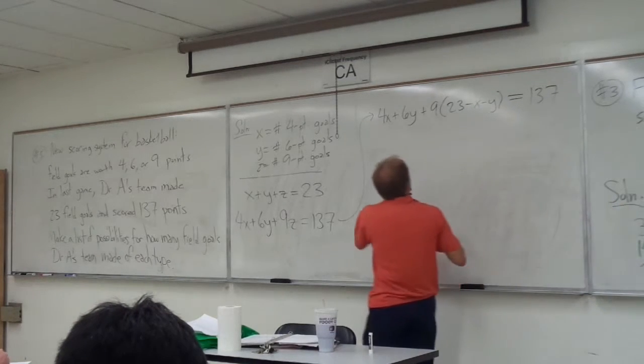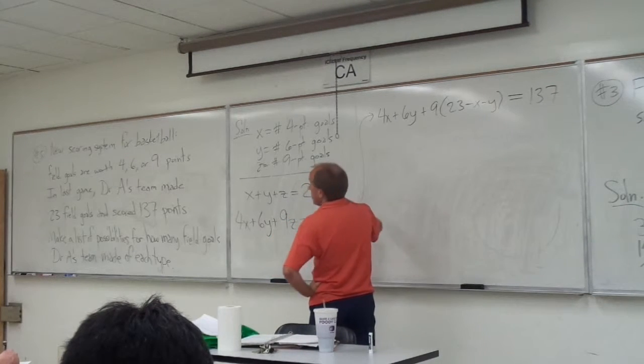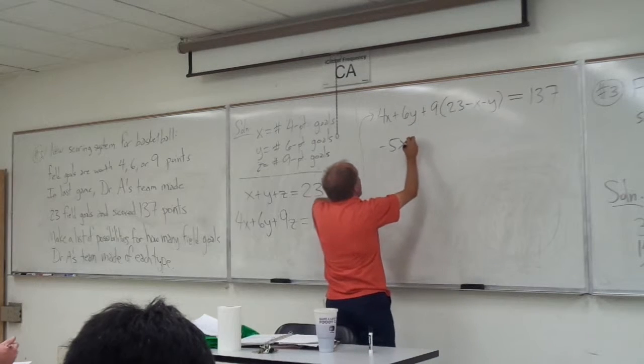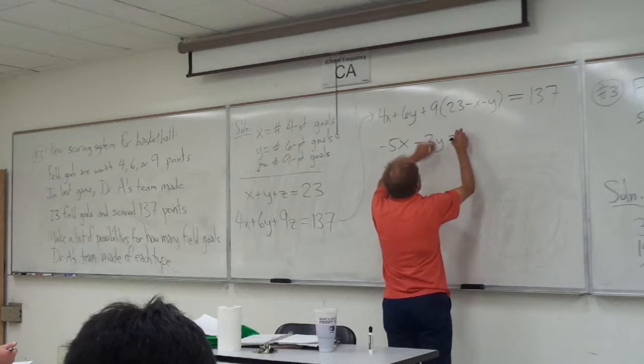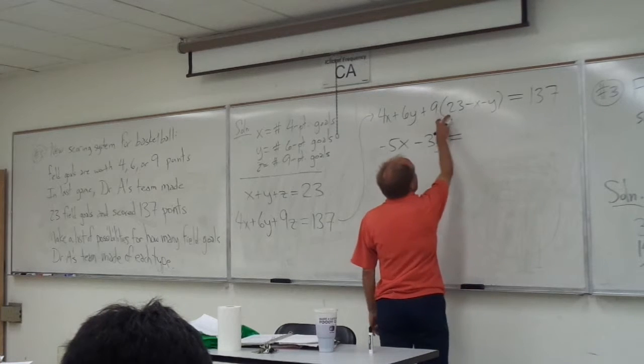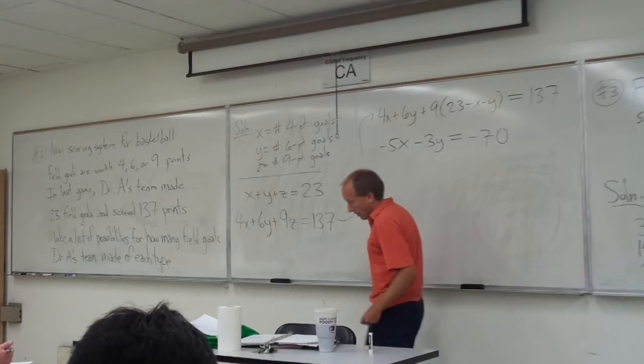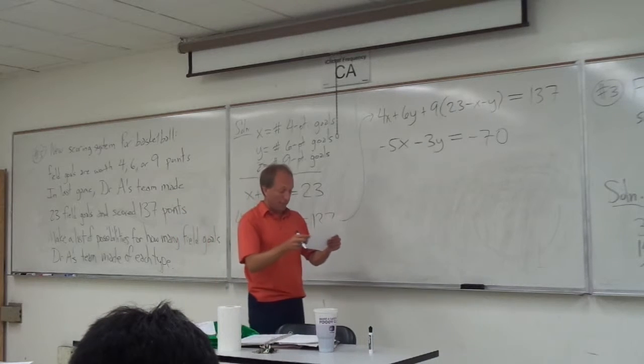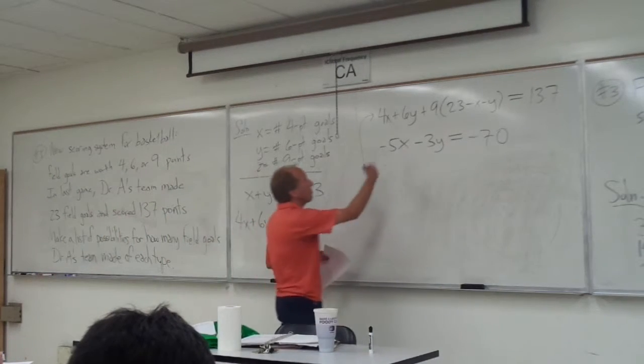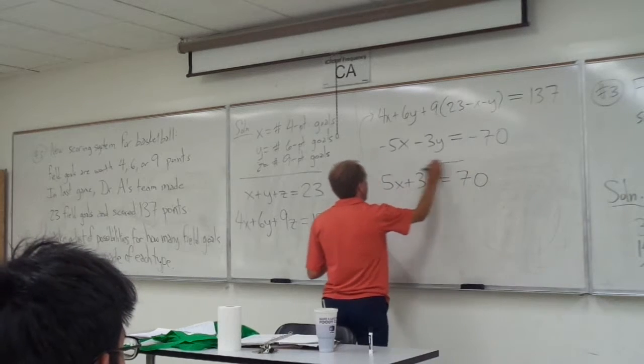Okay, so let's simplify that. So I have 4X and negative 9X, that's negative 5X. I have 6Y and negative 9Y is negative 3Y and then, 9 times 23, 207, and I have to subtract that from 137 and that should be negative 70. I don't like all the negative numbers, let me just multiply it through by negative 1. So 5X plus 3Y is equal to 70, is sort of our single GCD that we have here.